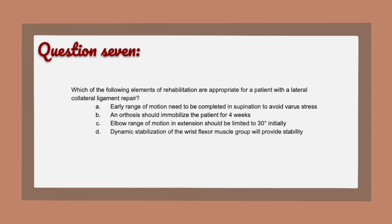Question 7: Which of the following elements of rehabilitation are appropriate for a patient with a lateral collateral ligament repair? A) Early range of motion needs to be completed in supination to avoid varus stress. B) An orthosis should immobilize the patient for four weeks. C) Elbow range of motion in extension should be limited to 30 degrees initially.